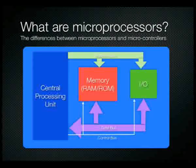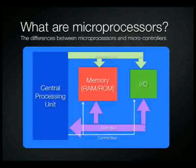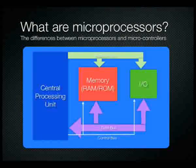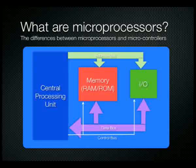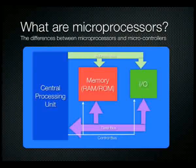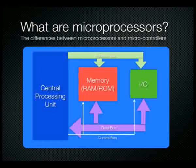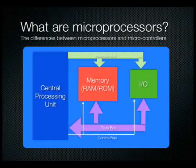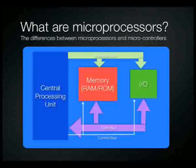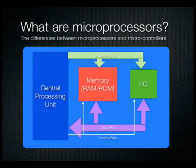When talking about microprocessors, there are generally two variations people refer to: microprocessors and microcontrollers. A microprocessor is essentially a central processing unit capable of activating particular logical function blocks depending on the instruction given to it. A microcontroller, by contrast, consists of not only a central processing unit but also storage capabilities — memory in the form of RAM or ROM — as well as some input-output devices.